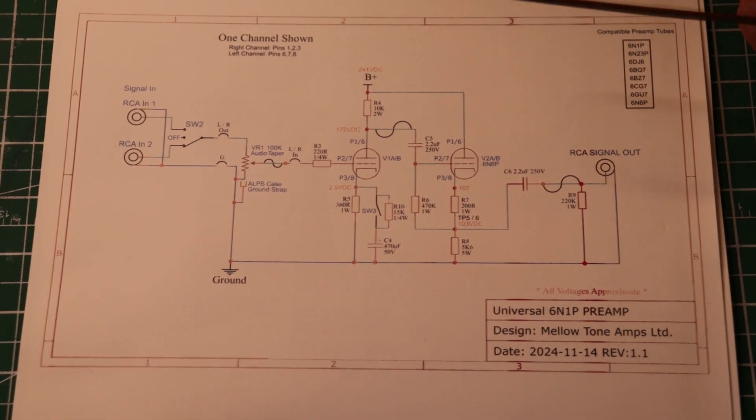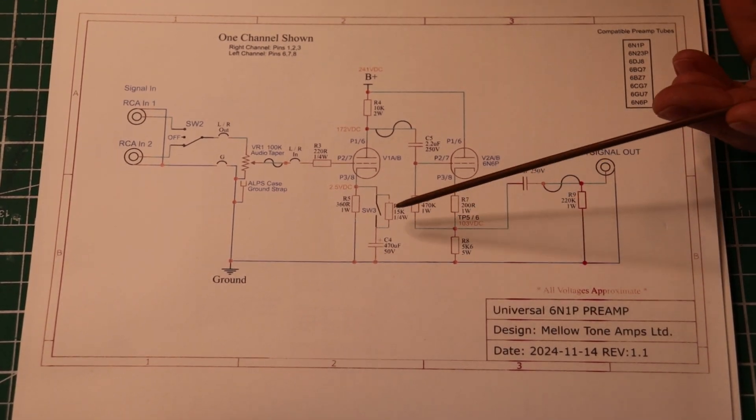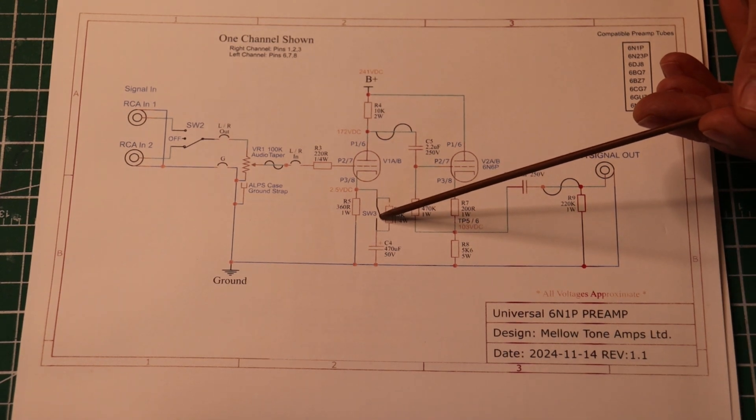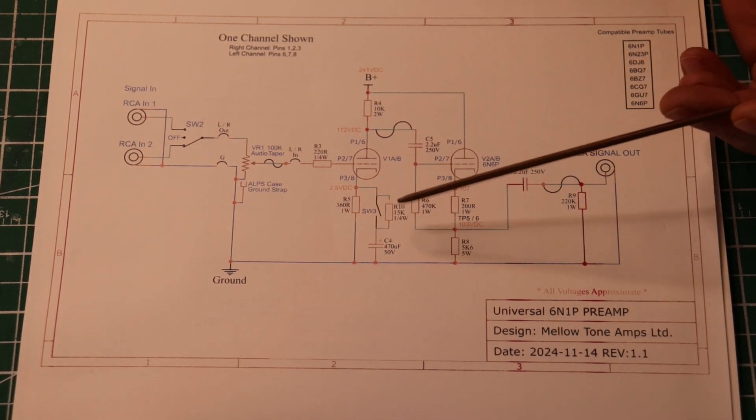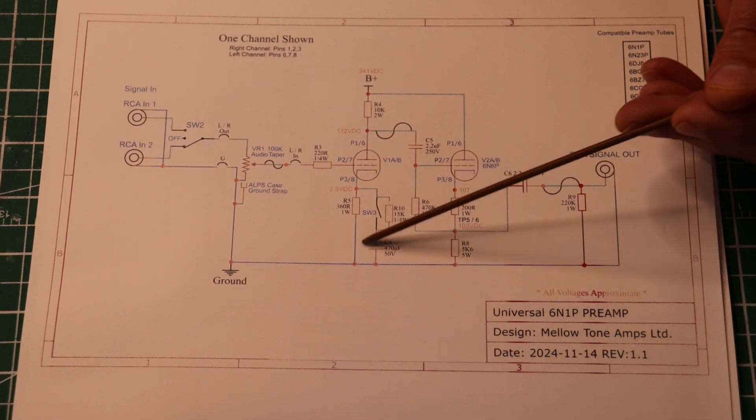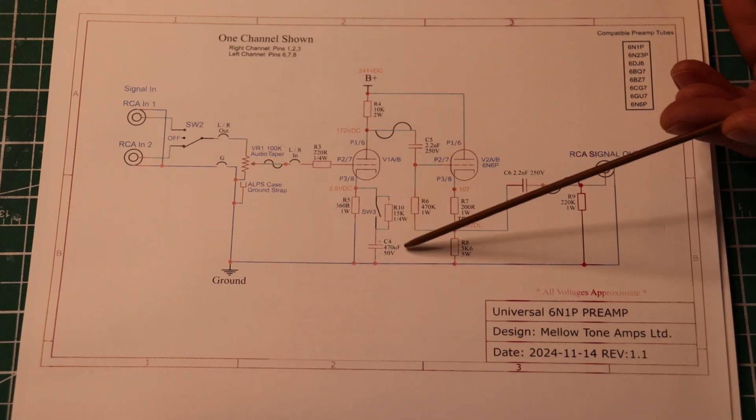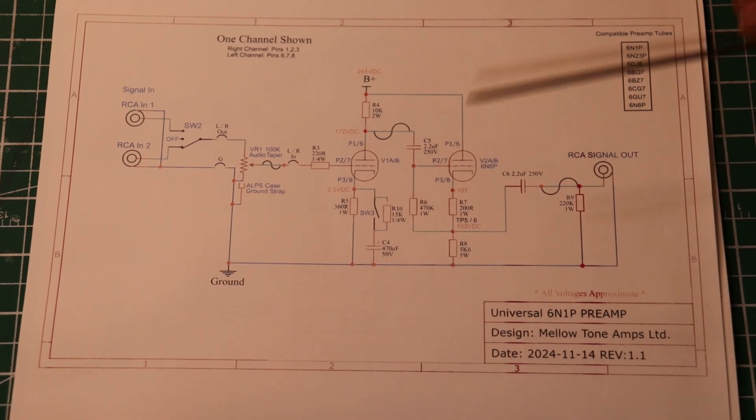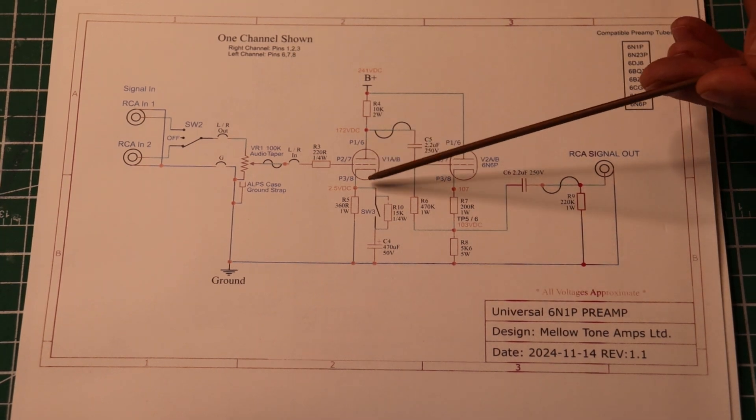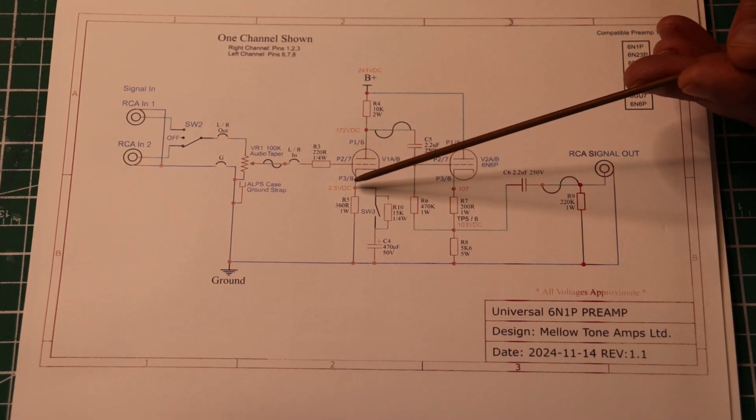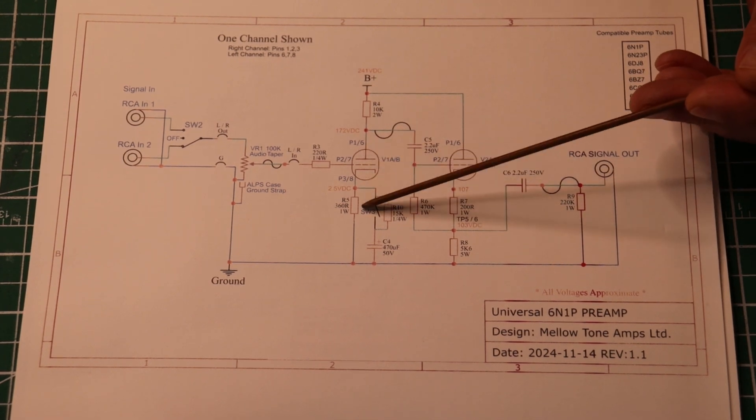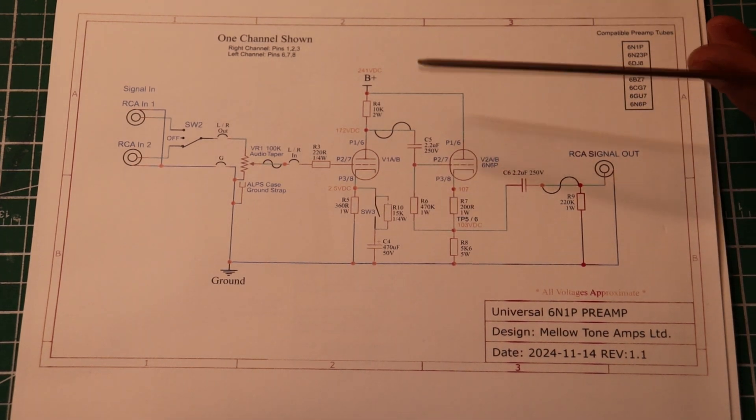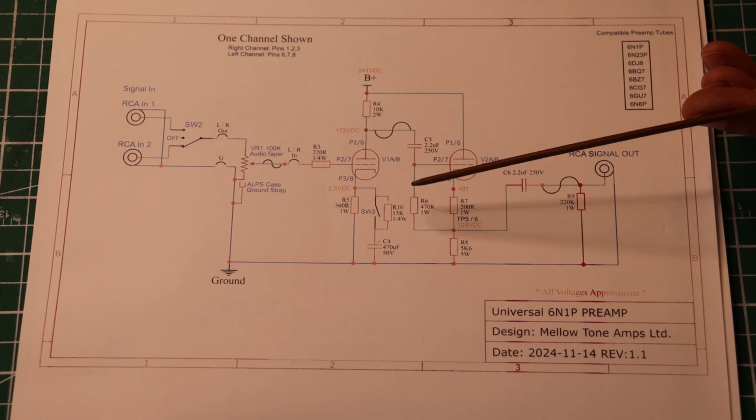Down here we have something really interesting, this is your bypass switch. When we put C4 in circuit, that's this 470 microfarad 50 volt capacitor, we're allowing the AC portion of the signal that is swinging in this tube to bypass the cathode resistor. It creates a more efficient gain stage as a result and the volume difference is significant.